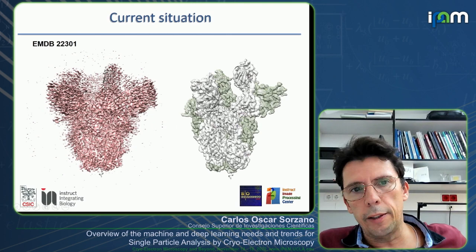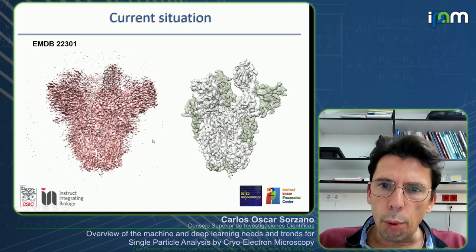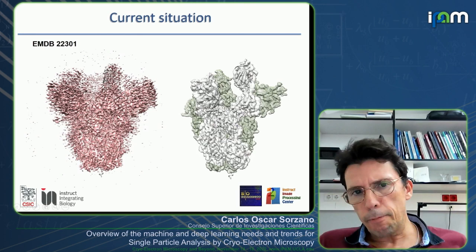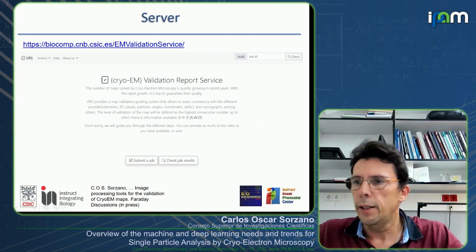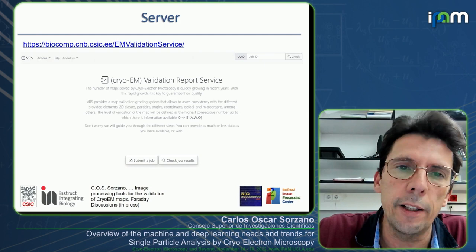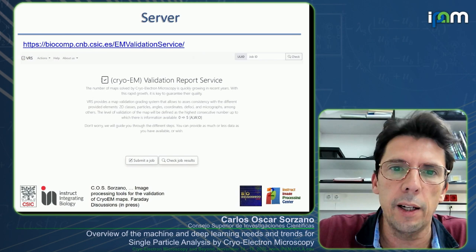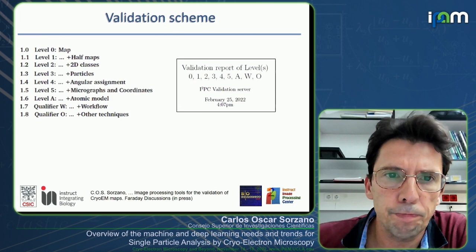This is our current situation. At the EMDB, there are structures with visible artifacts. When you reprocess the same data applying all the checks we discussed, the result is noticeably different. To address this, we have set up a validation server that incorporates all the methods we know for validating structures. You can submit your structure, the two half-maps, particles, classes, angles — whatever you have — and check whether there is any pathology in your structure.